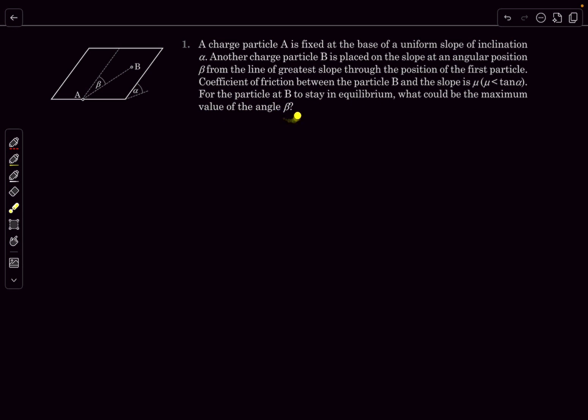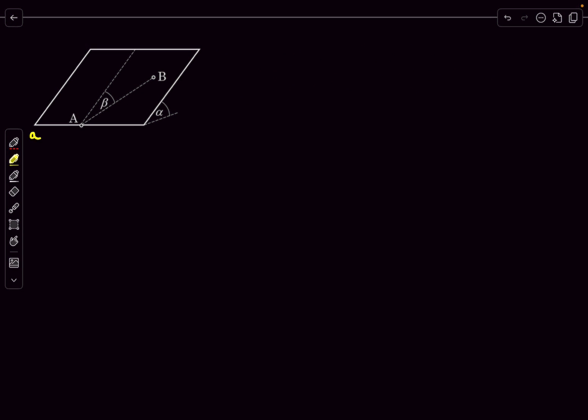For the particle at B to stay in equilibrium, what could be the maximum value of the angle beta? Basically, we have to balance the forces on charge B and figure out what's going to be the maximum value of beta. Give this problem a try, then check out the solution. I'm going to begin by naming the plane as lowercase A B C D.